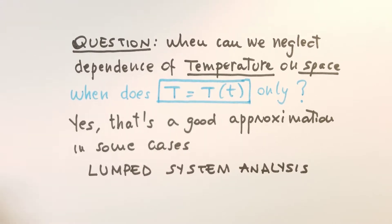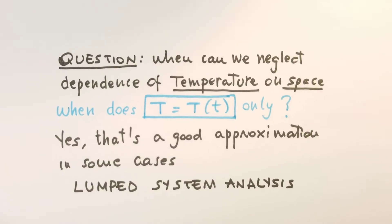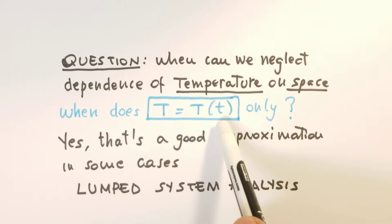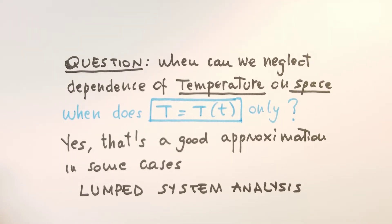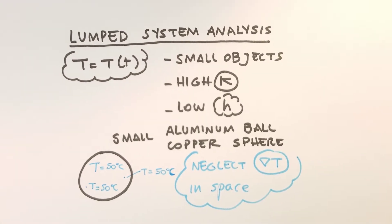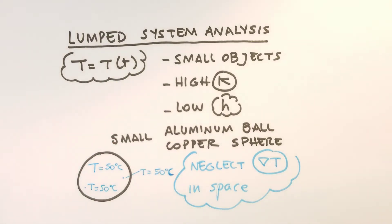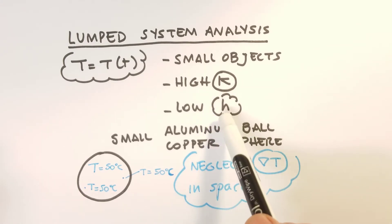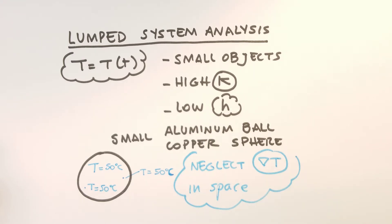To simplify the analysis we can ask ourselves whether we can neglect the dependence of temperature on space, and assume the temperature depends only on time. We have to find cases where this is a good approximation. These cases are studied under the lumped system analysis. The lumped system analysis — where temperature depends only on time and not on space — is valid when we consider small objects whose material is characterized by quite high thermal conductivity, and where the convection coefficient h that cools or warms the object is quite low.